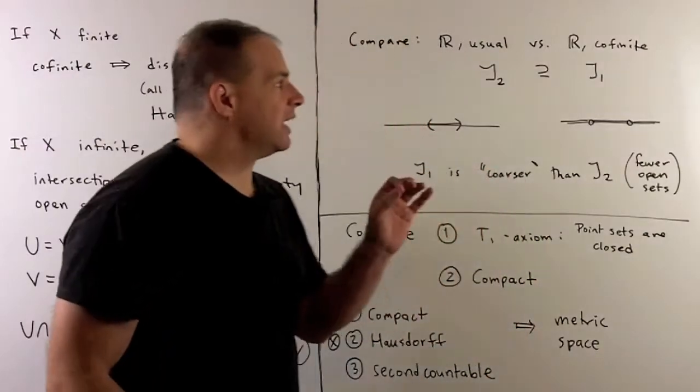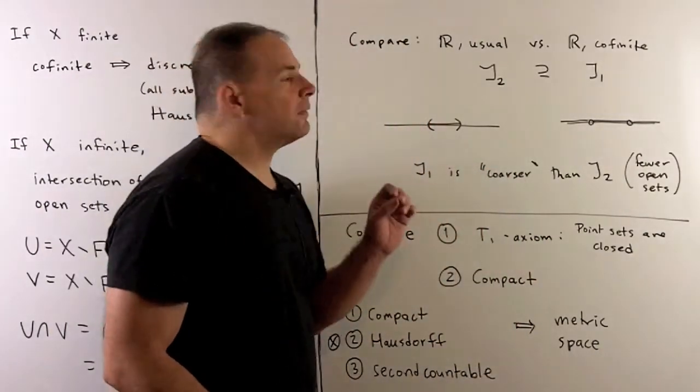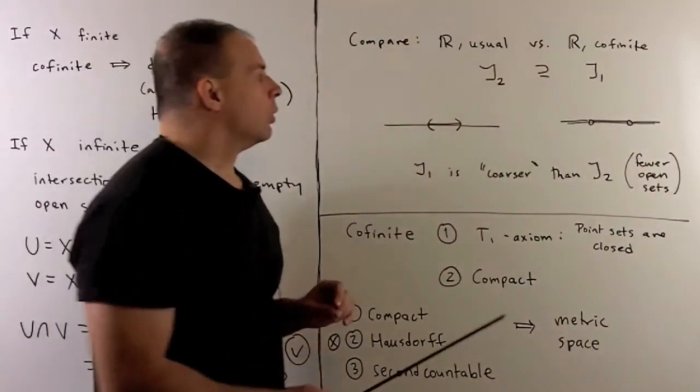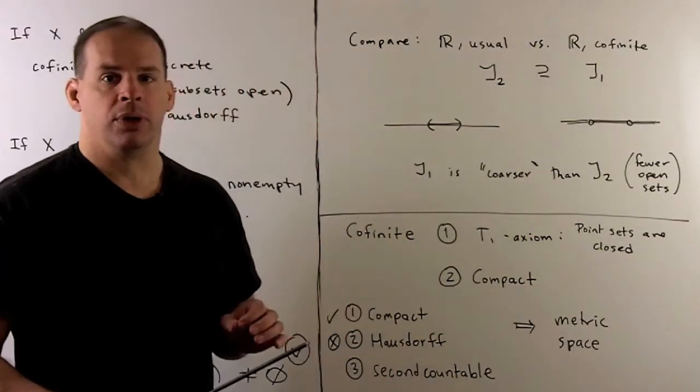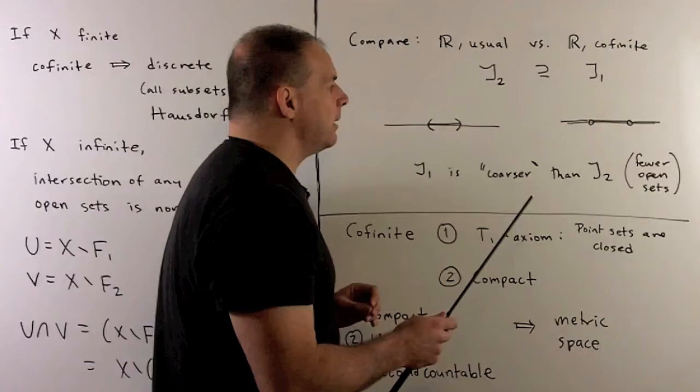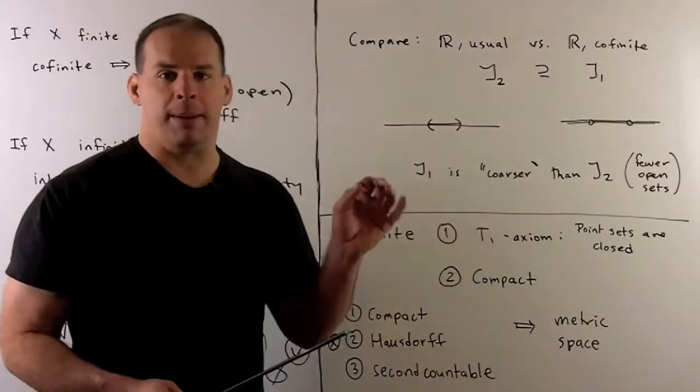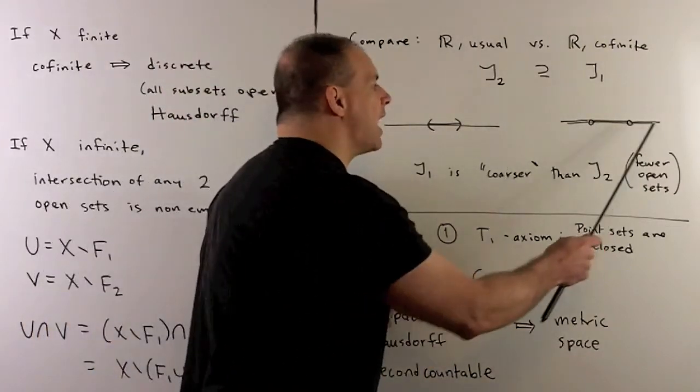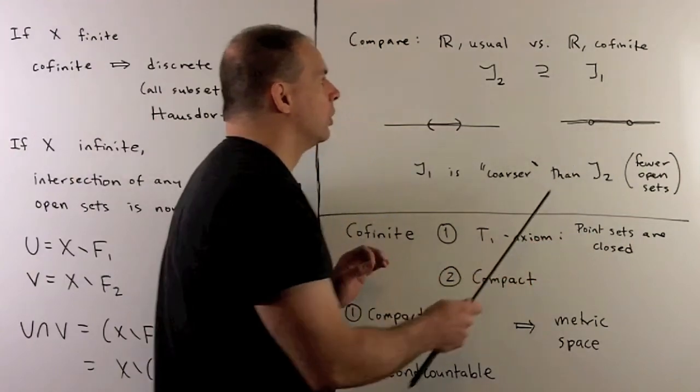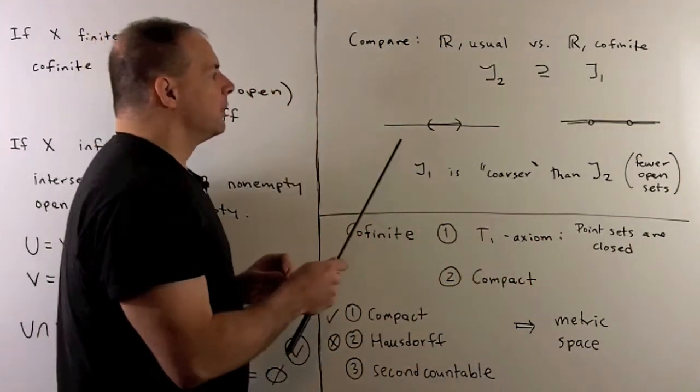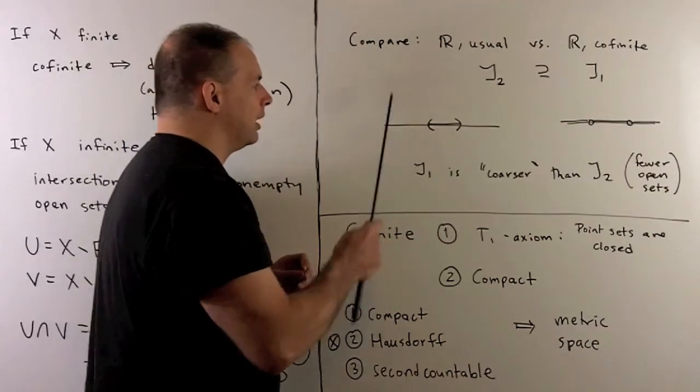Let's consider the example. We'll have the real line for our space. We'll compare the cofinite and the usual topologies. For the cofinite topology, the open sets are either the empty set, or we take the real line and throw away some finite subset. For the usual topology, we're just going to generate that with the open intervals.